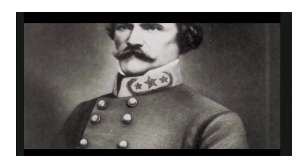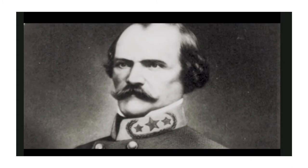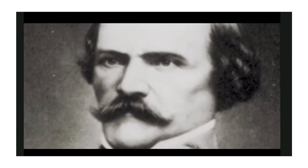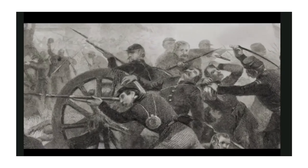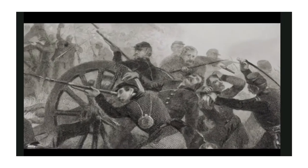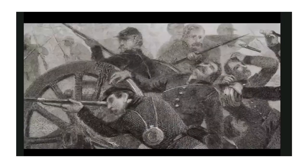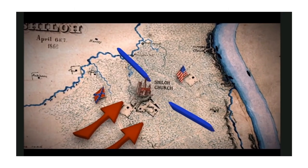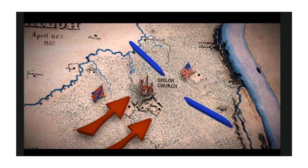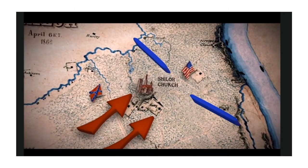But Confederate General Albert Sidney Johnson attacks first. The Union forces are so unprepared that they're actually still making their breakfast — some are still sleeping in their tents — and they are almost completely overrun by this surprise attack. The Confederates drive the Union army back toward the Tennessee River, threatening to destroy it.